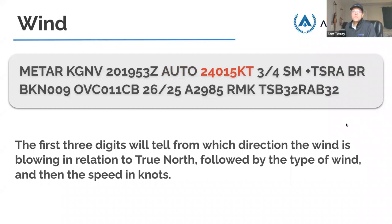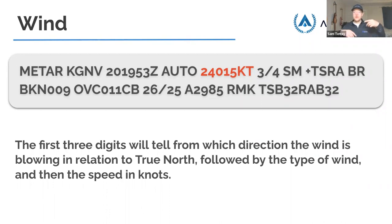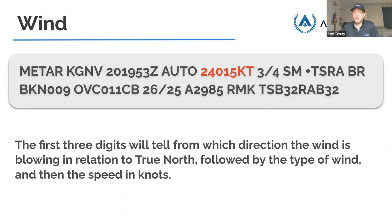Wind. The next section covers wind, always in relation to true north. The first three digits tell you the direction from which the wind is blowing. In this example, you have 240 at 15 knots — 240 is a southwesterly heading, since 270 is west and 180 is south. Sometimes you'll see a G, which stands for gusting. So 15G25 means winds at 15 knots with gusts up to 25 knots.